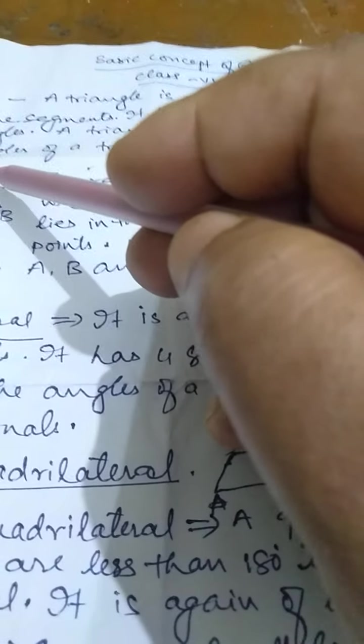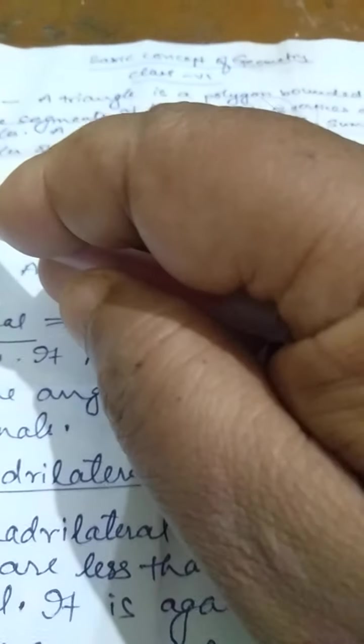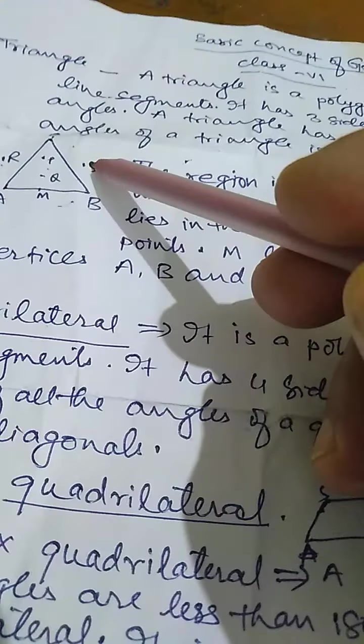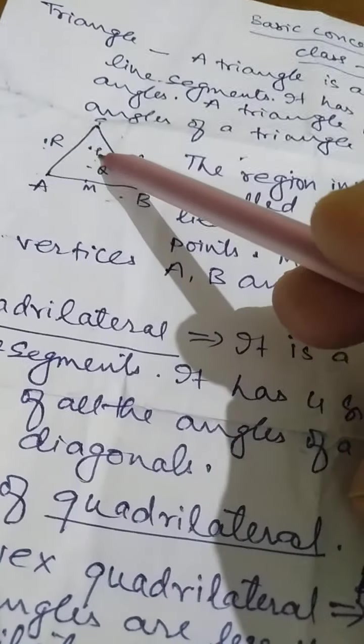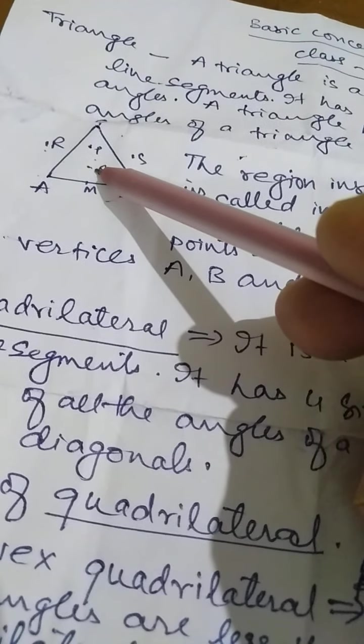Here, point R and point S are in the exterior of the triangle. Point P and point Q are in the interior of the triangle.